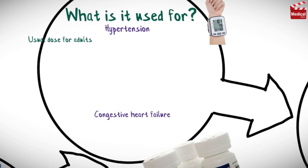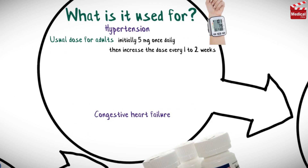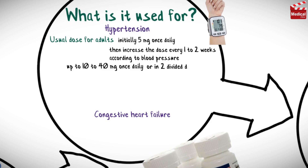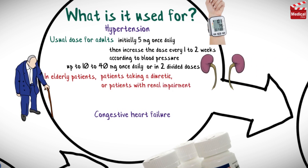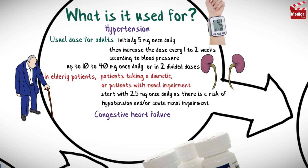The usual dose for hypertension for adults is initially 5 mg once daily, then increase the dose every 1 to 2 weeks according to blood pressure, up to 10 to 40 mg once daily or in two divided doses. In elderly patients, patients taking a diuretic, or patients with renal impairment, start with 2.5 mg once daily, as there is a risk of hypotension or acute renal impairment.